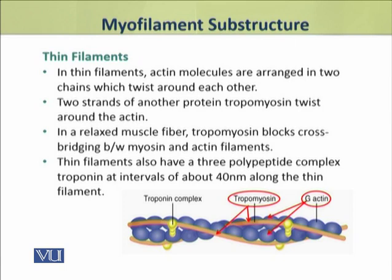These thin filaments also have a complex called Troponin. This Troponin is made up of three polypeptides. Troponin is not continuous, but it is present at intervals of about 40 nanometers along the length of the thin filaments.